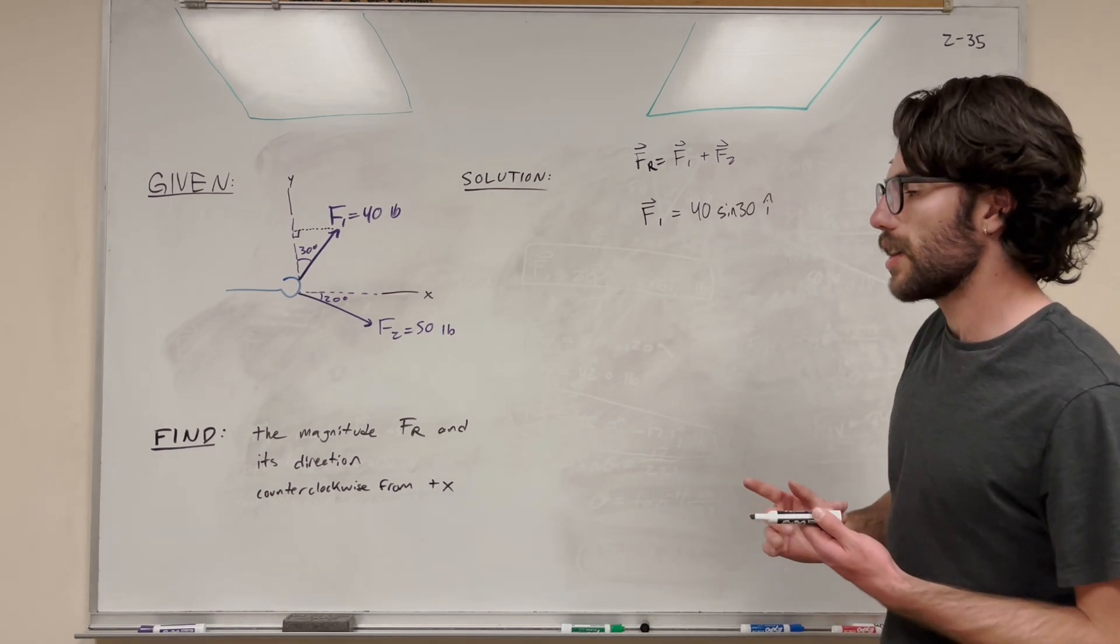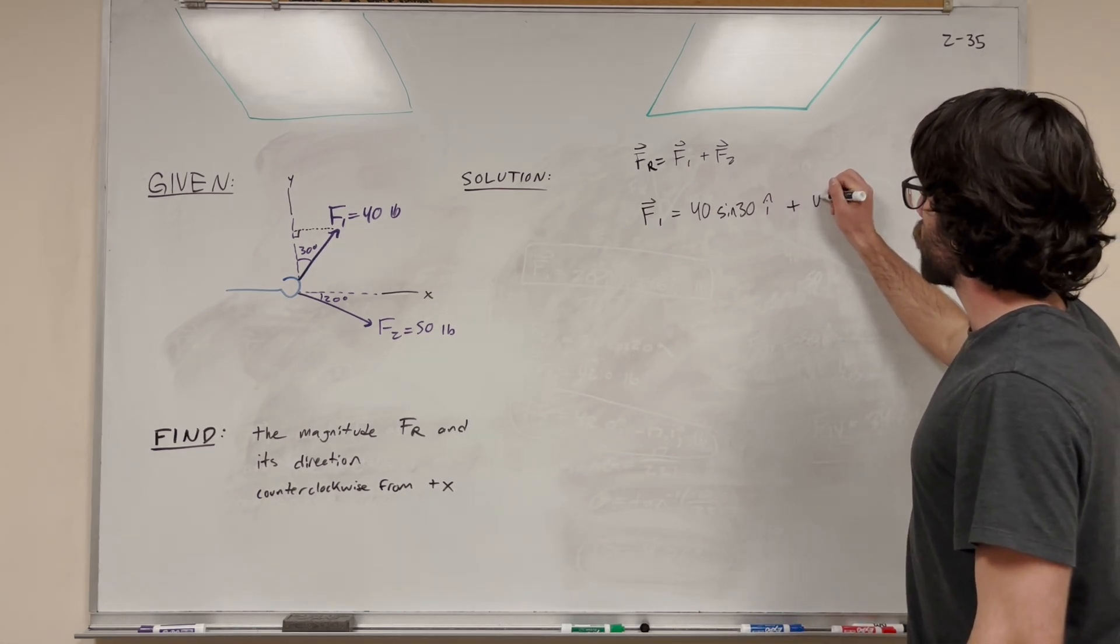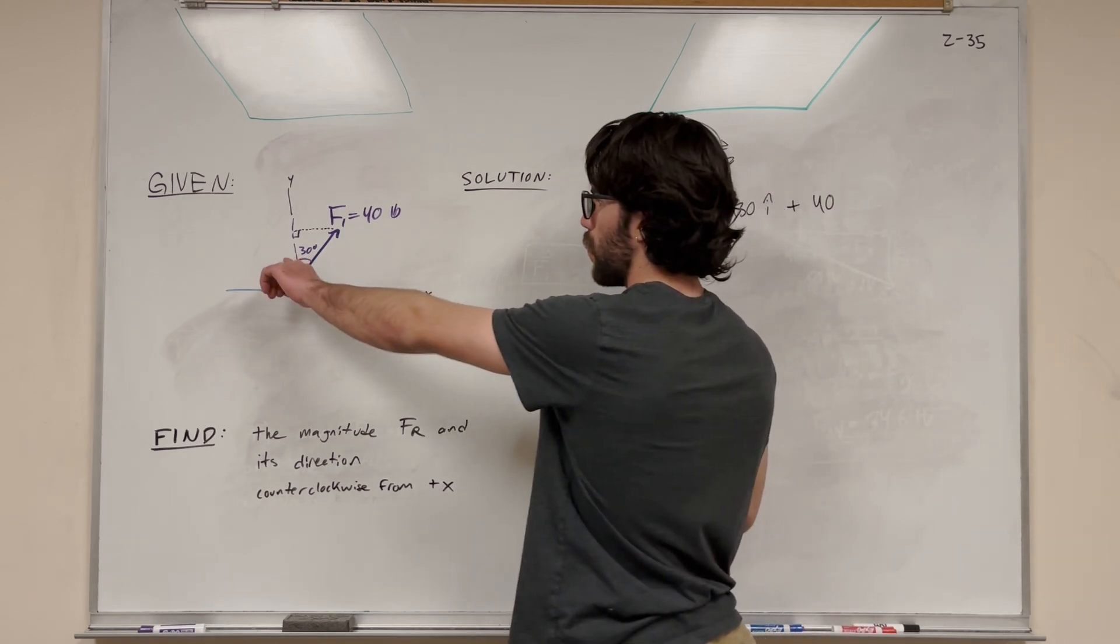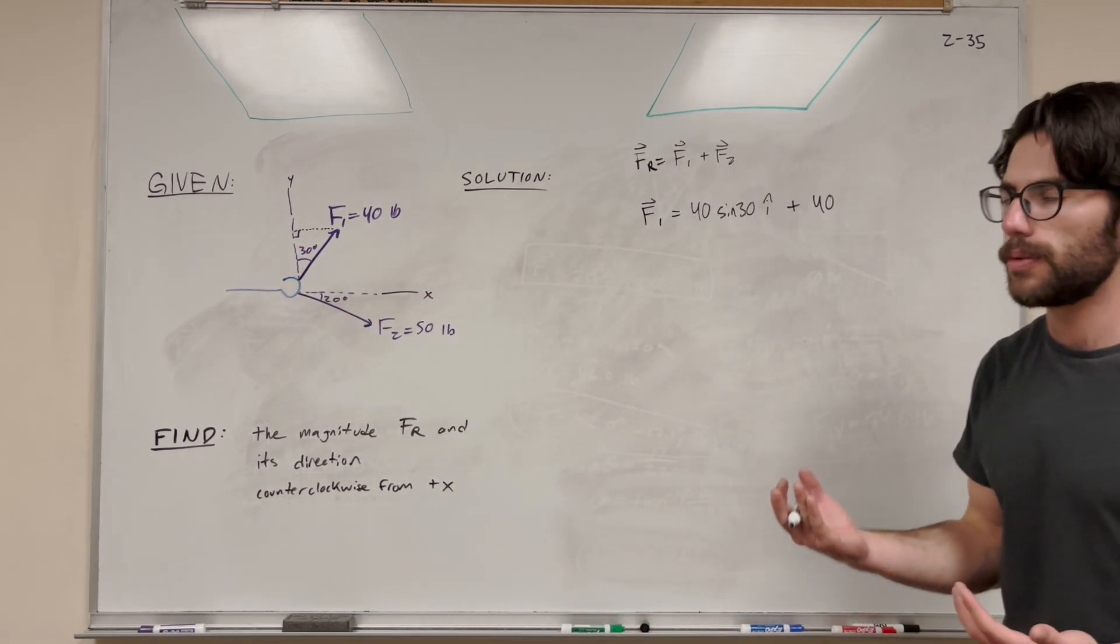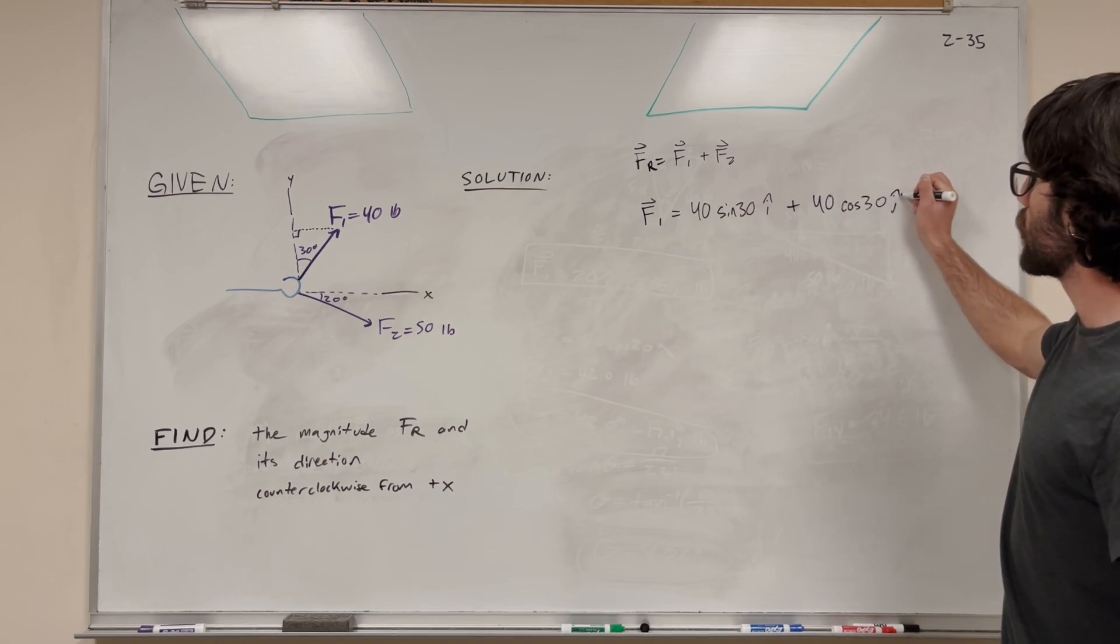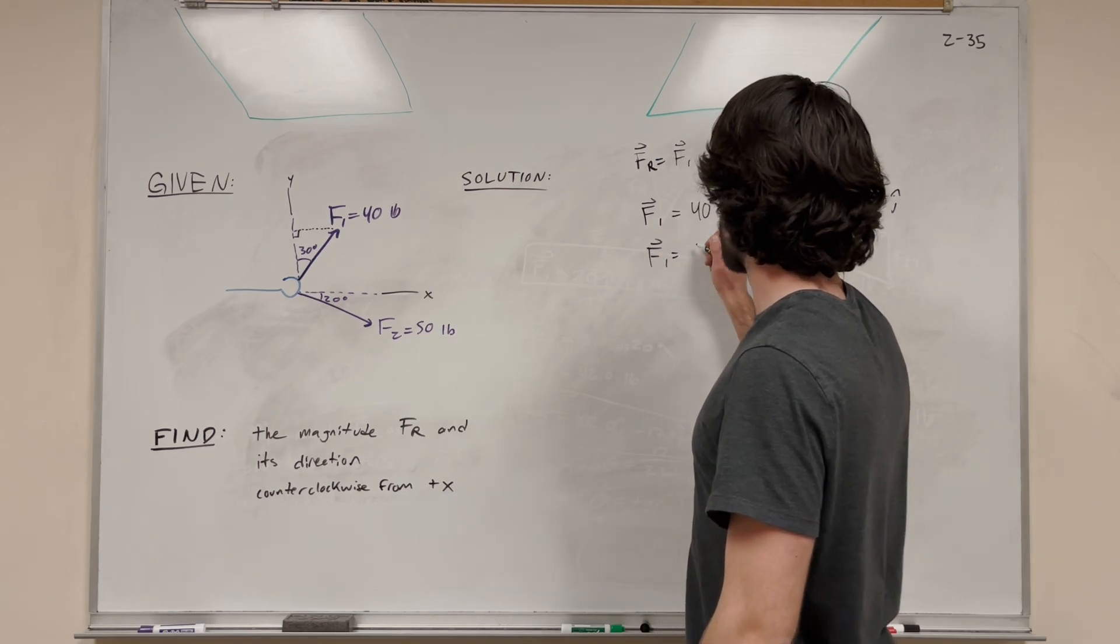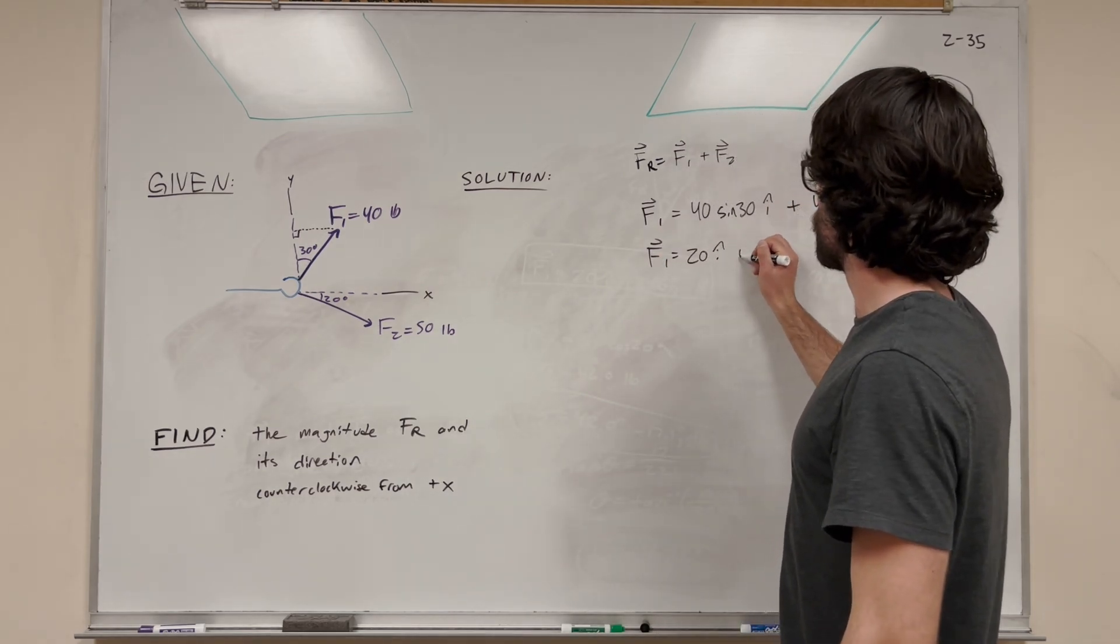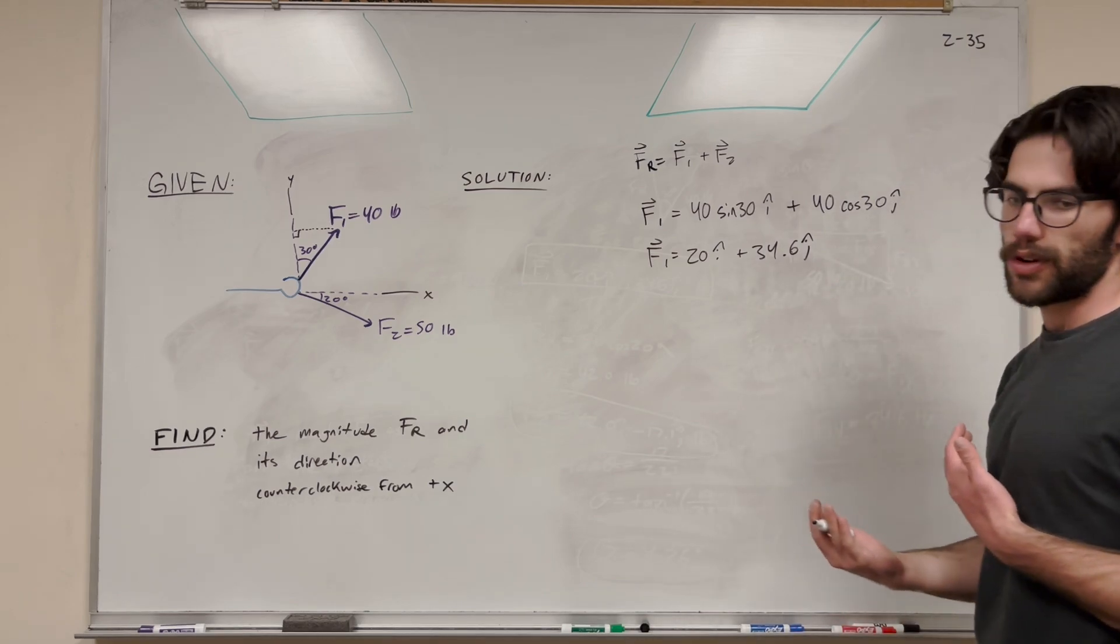Now if we want to find the j component, the y component, we're going to do the same thing. We're going to add 40, the hypotenuse. But this time, the y component here is adjacent to the 30 degrees. So if it's adjacent, we use cosine of 30 degrees j. And what this gives you is 20i plus 34.6j. So that's our force 1.